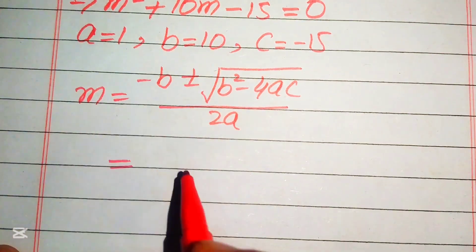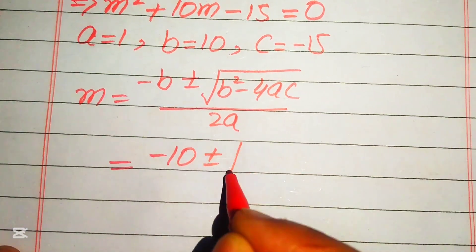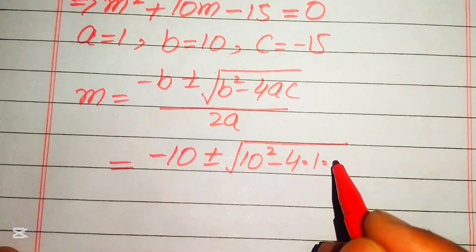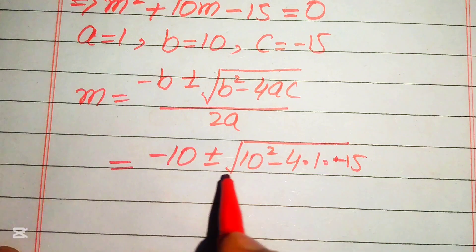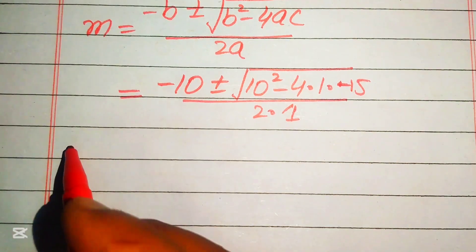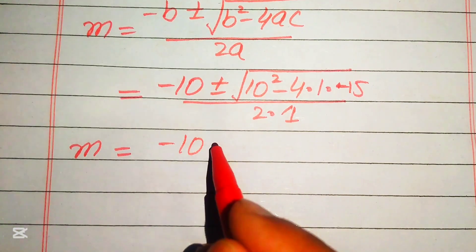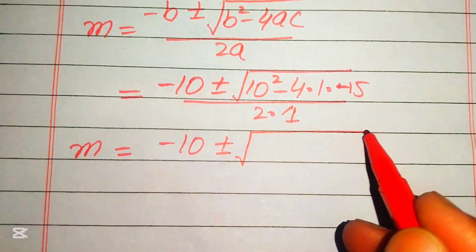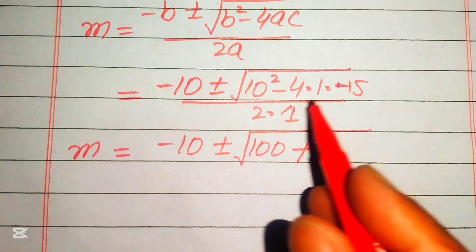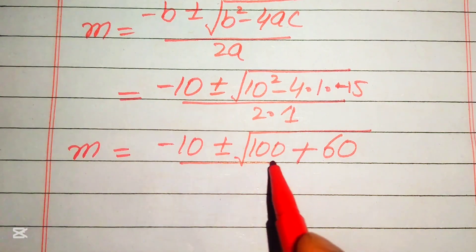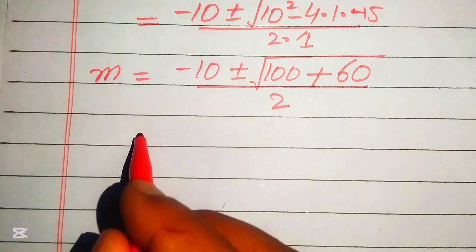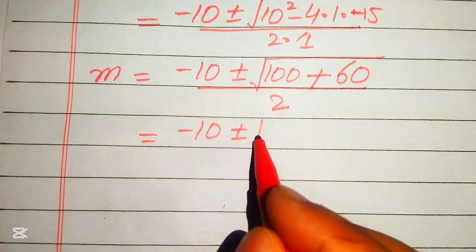Substituting the values — b = 10, a = 1, c = −15 — we get: m = (−10 ± √(10² − 4(1)(−15))) / (2 × 1). Since minus times minus becomes plus, this gives m = (−10 ± √(100 + 60)) / 2, which is m = (−10 ± √160) / 2.